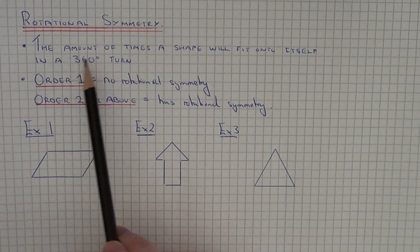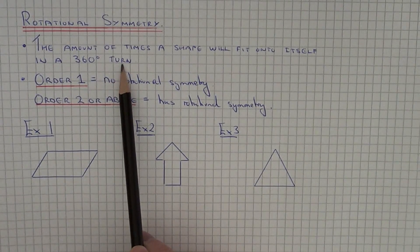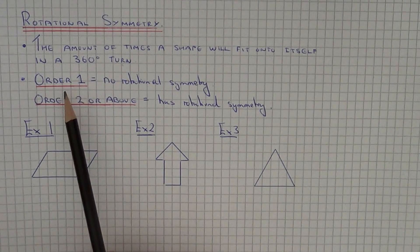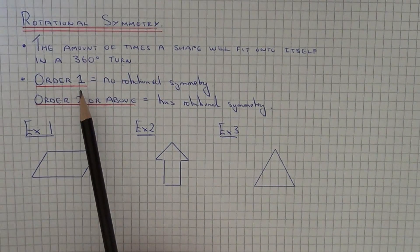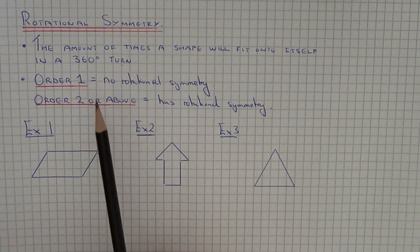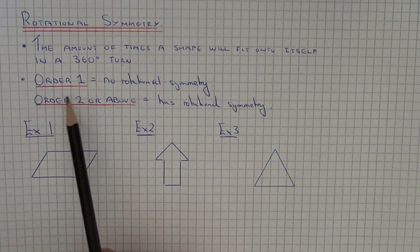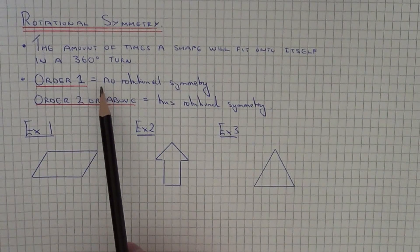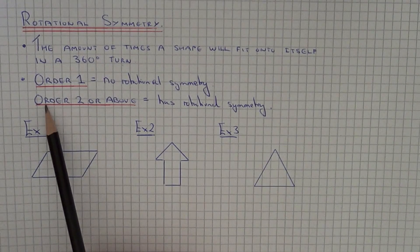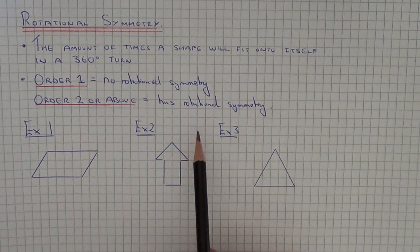Rotational symmetry is the amount of times a shape will fit onto itself in a 360 degree turn — that's a full turn. When we talk about rotational symmetry we need to find the order of rotational symmetry. The order is the amount of times it will fit onto itself in the full turn. If it has order 1 rotational symmetry, that means it will only fit once onto itself in a full turn, so the shape will have no rotational symmetry. If the order of rotational symmetry is 2 or above, then the shape will have rotational symmetry.